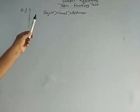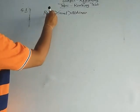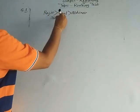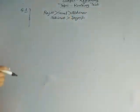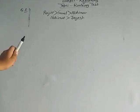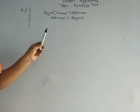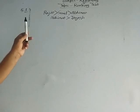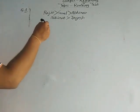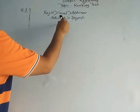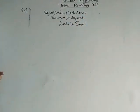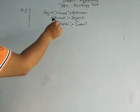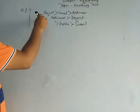Next point: Abhinav is heavier than Jayesh, so the symbol will be in this position — Abhinav heavier than Jayesh. Next point: Kashi is heavier than Sunil but not as heavy as Rajiv, meaning Rajiv is heavier than Kashi, and Kashi is heavier than Sunil.